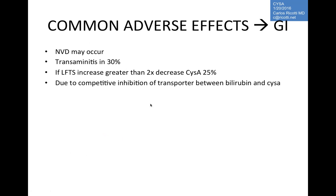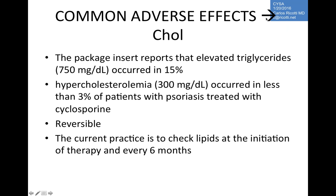Nausea, vomiting, and diarrhea can occur. Transaminitis or elevated LFTs: if LFTs increase greater than two to three times normal, decrease cyclosporine by 25%; at three times, you are pushing the limits of potential idiosyncratic hepatotoxicity. Patients not infrequently develop elevated triglycerides and occasionally hypercholesterolemia — also reversible. Check lipids every six months.